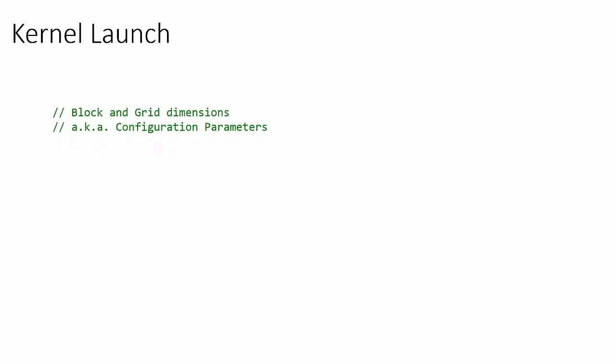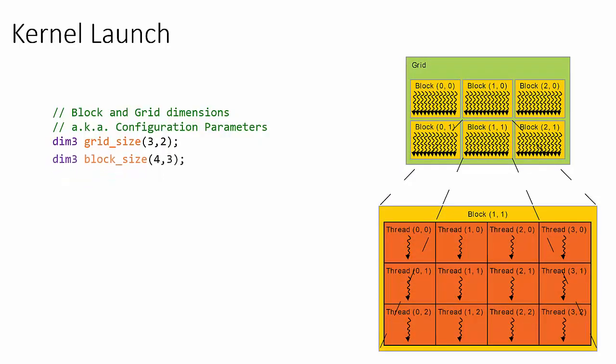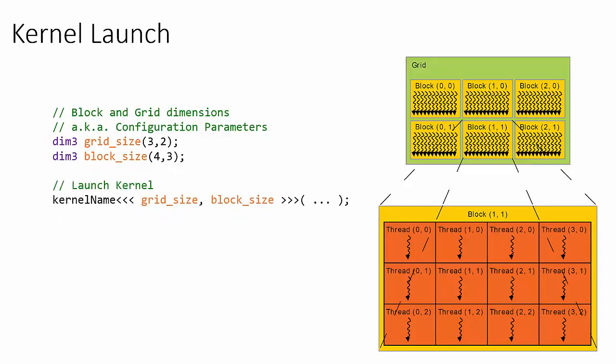Let's take another look at our previous example to demonstrate how to implement this kernel launch syntax. We first configure the grid and block dimensions — in this example, the grid dimension is of size 3 by 2 and the block dimension is of size 4 by 3. We then launch the kernel with the specified configuration parameters as seen in the example.